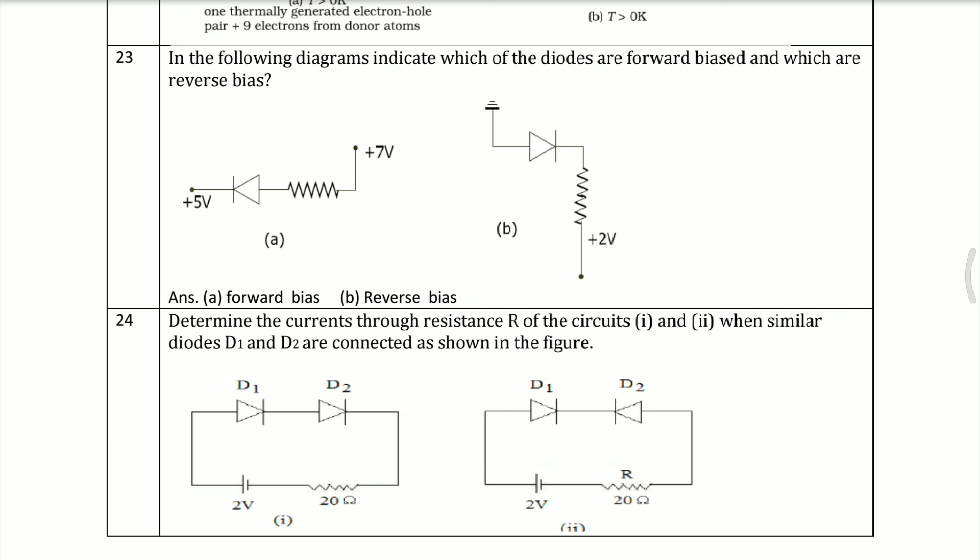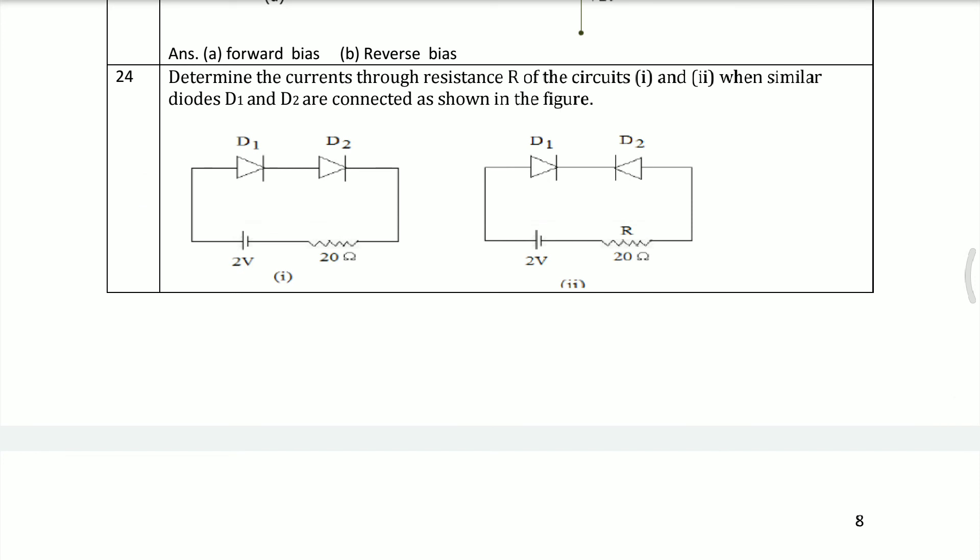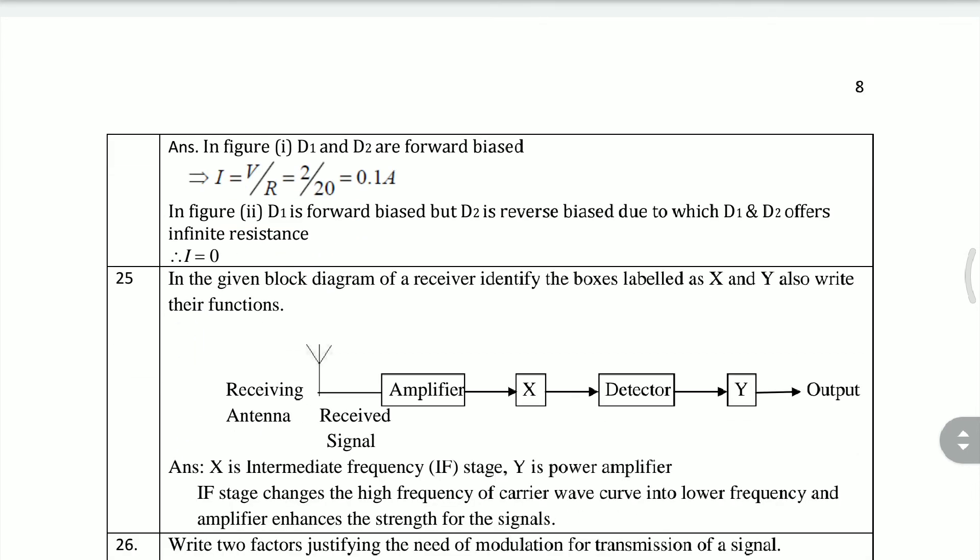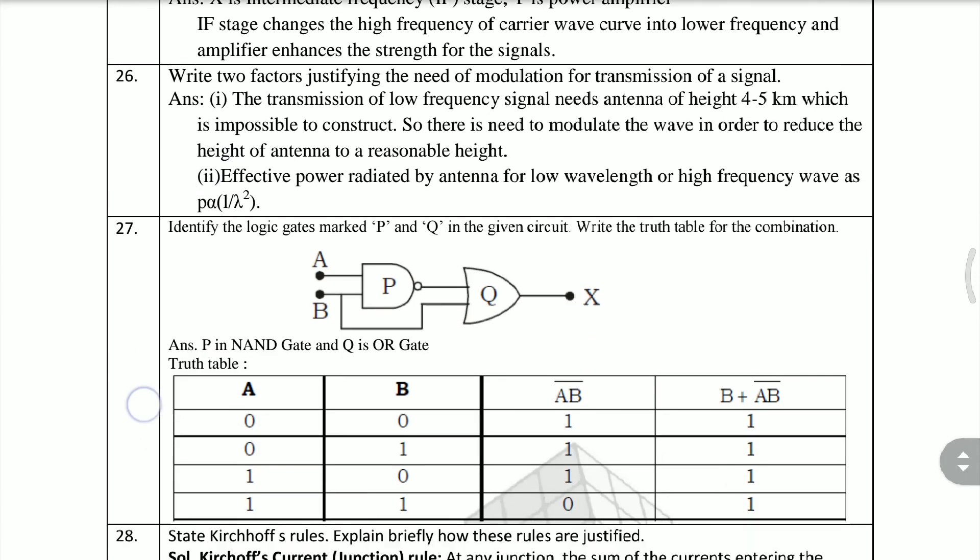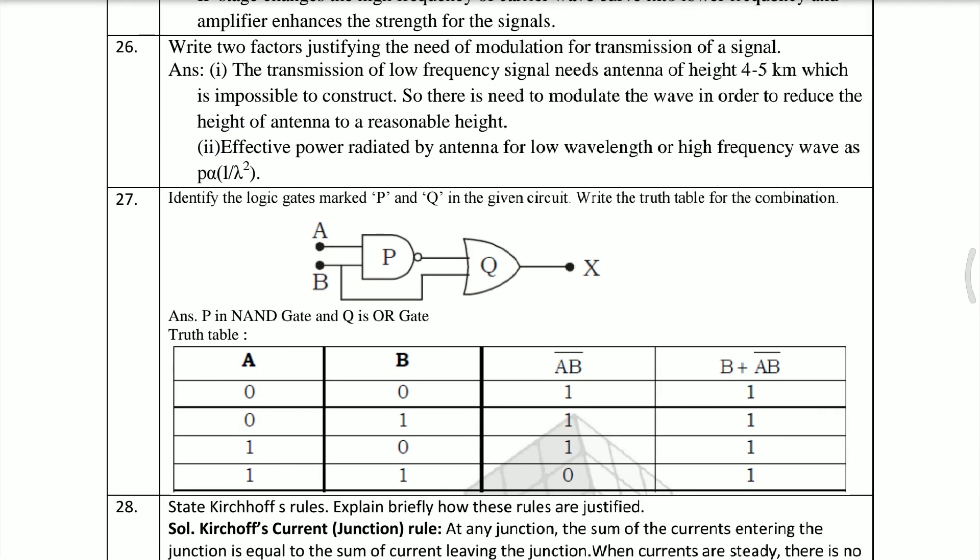Easily find the current through resistance R of the circuit. These are some kind of numericals you have to know: I equals V by R, simple value put and the answer will come. Now block diagram - I guess from communication system chapter there is a block diagram. Easily this question comes that there are two blocks missing. The name of block X is intermediate frequency and Y is power amplifier. Write two factors justifying the need of modulation for transmission of signal.